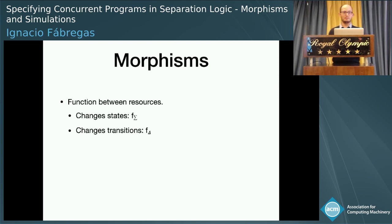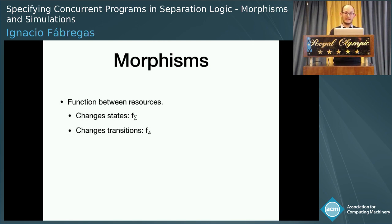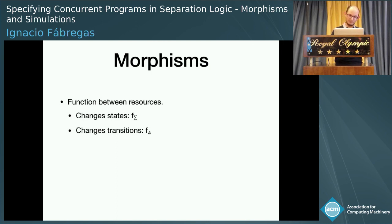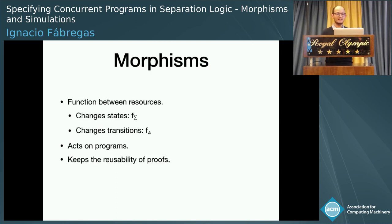Morphisms are going to be just functions between resources. Since resources are state transition systems, morphisms will have two parts: one in charge of changing the states, F-sigma, and one in charge of changing the transitions, F-delta. The idea is that these morphisms will also change the program itself, and that will help us to keep the reusability of proofs.